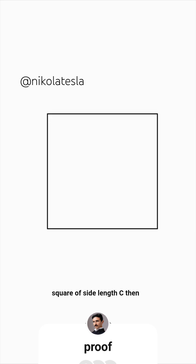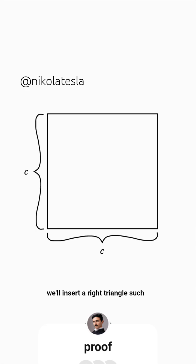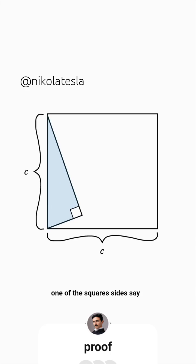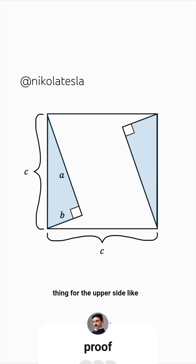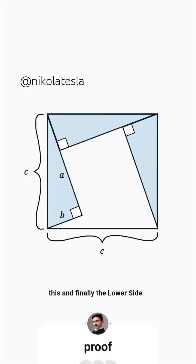We'll start with a square of side length C. Then we'll insert a right triangle such that its hypotenuse is aligned with one of the square's sides. Say the triangle has legs A and B. We'll now take a copy of this triangle and align its hypotenuse with the opposite side of the square. We'll do the same thing for the upper side and finally the lower side.